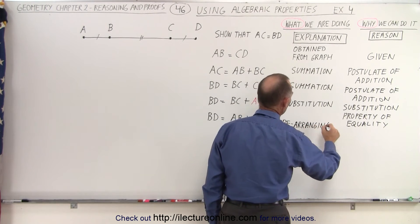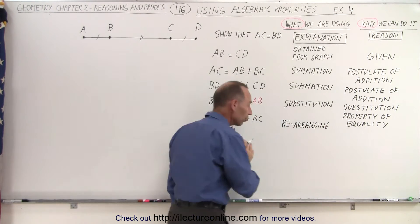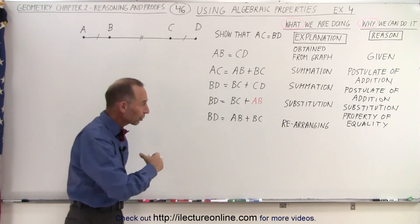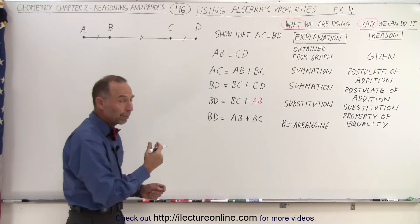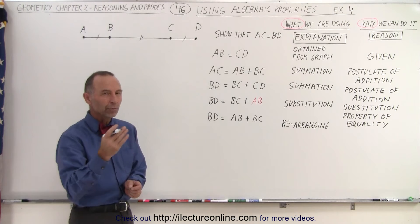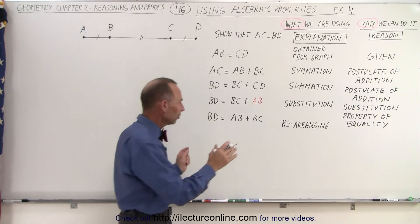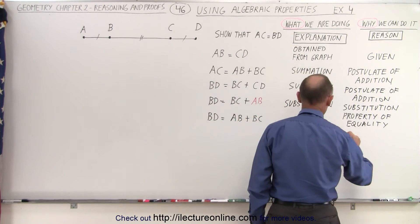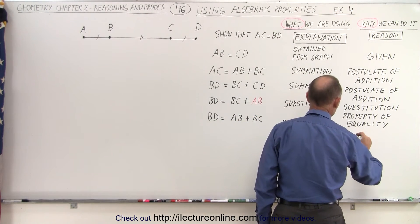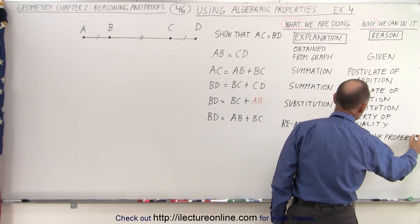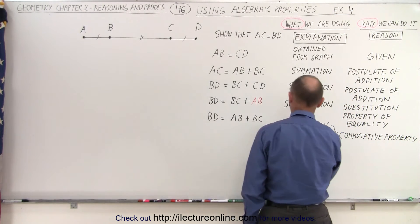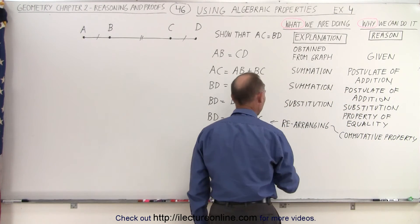Why can I do that? Well, that is an algebraic property — the commutative property. The commutative property says that A plus B equals B plus A, so we can simply change the order. That's the commutative property.